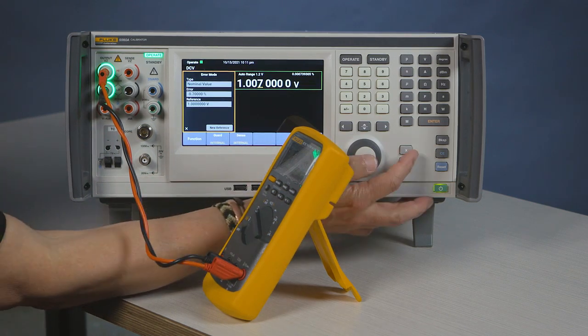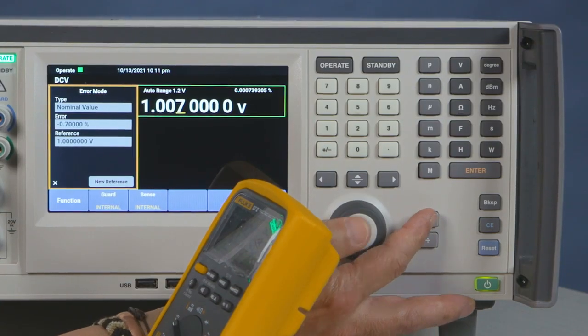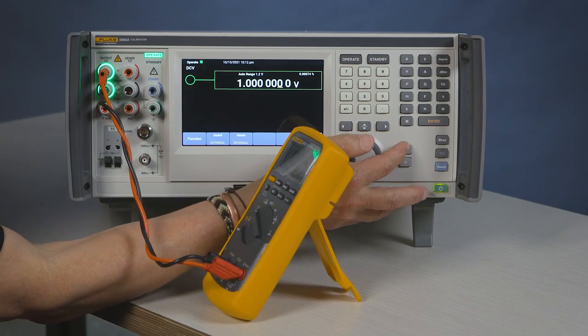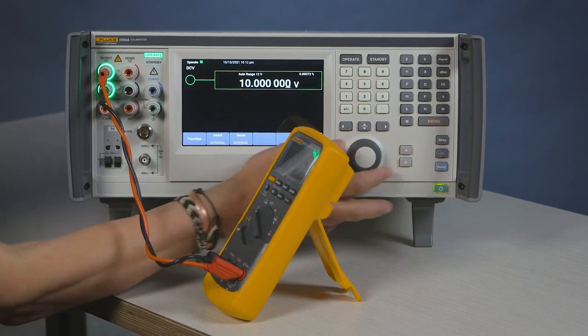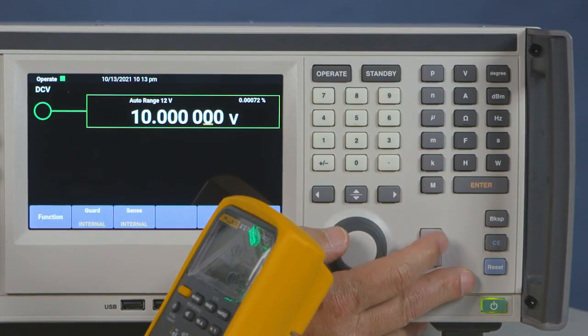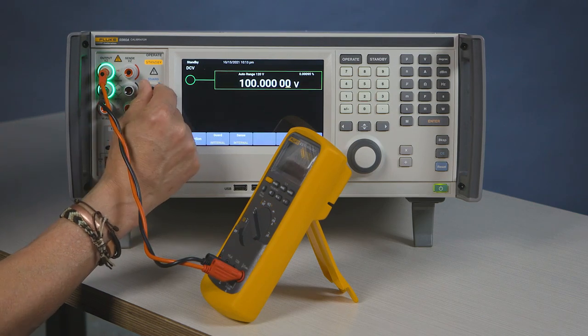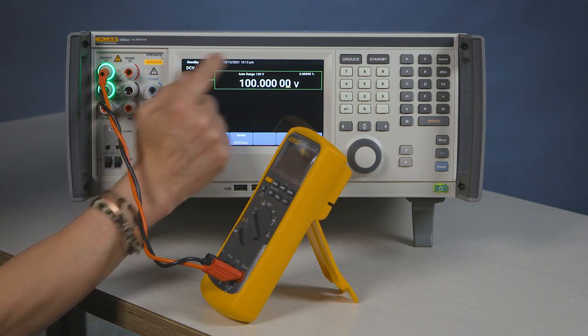You also have the capability of doing times 10, and you're also able to move to 100. That'll put you on standby because you're above 30 volts.